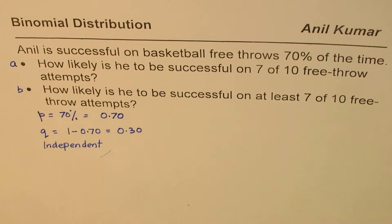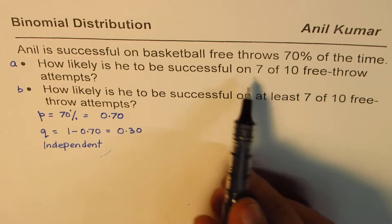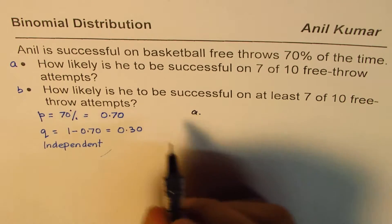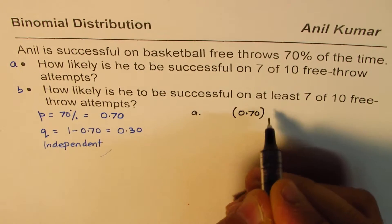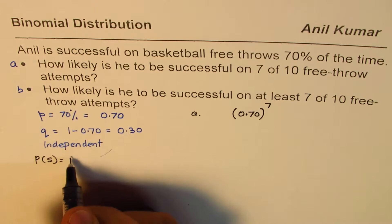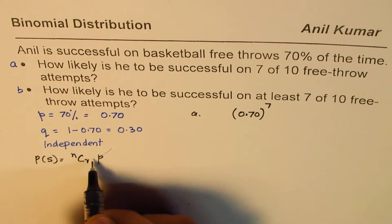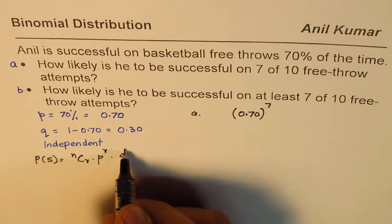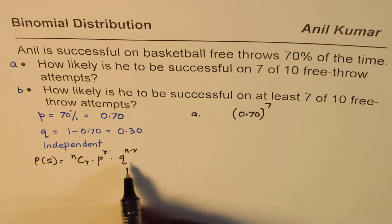For Part A, how likely is he to be successful on 7 of 10 free throws? That means 7 are successful but 3 are not. The general formula is: probability of R successes in N attempts equals NCR times probability of success to the power of R, times probability of failure to the power of N minus R.